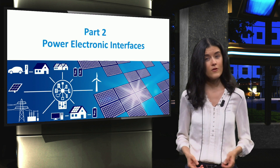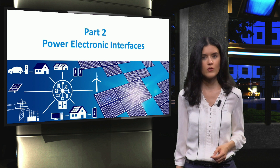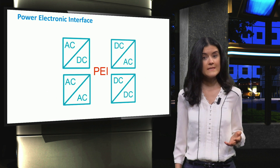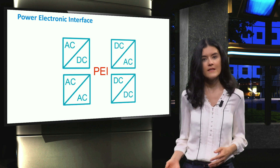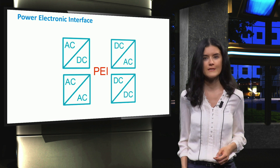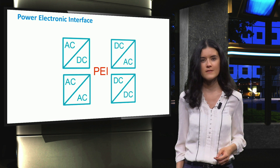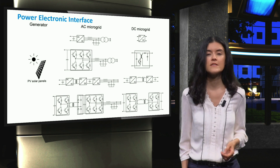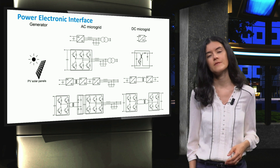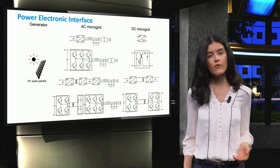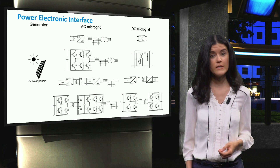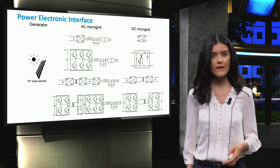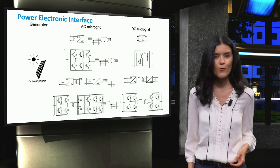In the second part, we will discuss the power electronics interfaces. We will discuss all combinations of AC and DC power electronics interfaces. You will learn about the various interfaces in AC and DC microgrids for renewable generation components, non-renewable components and energy storage components.